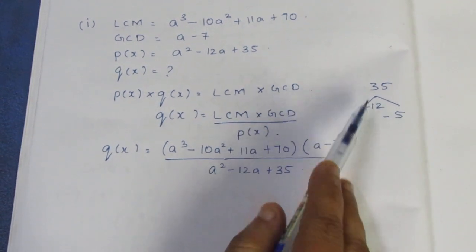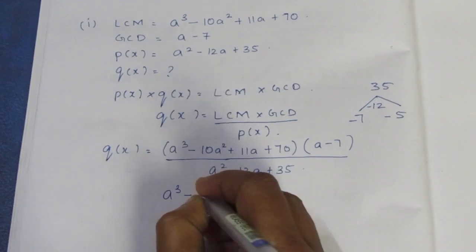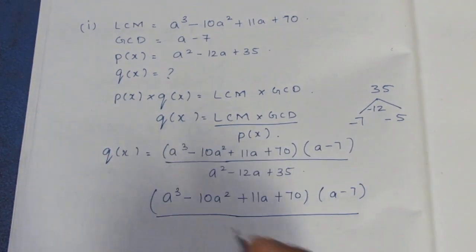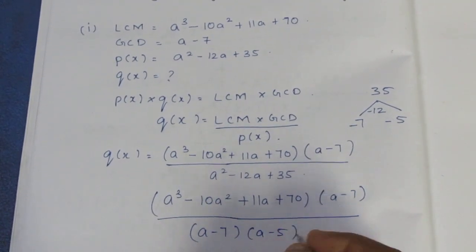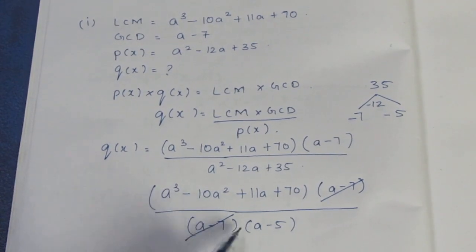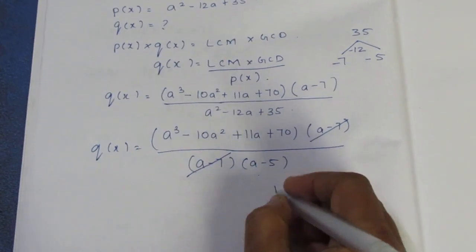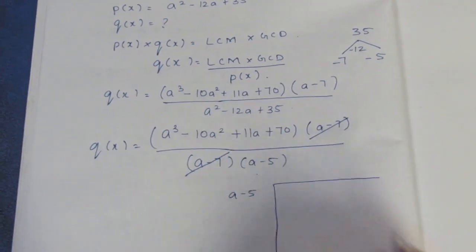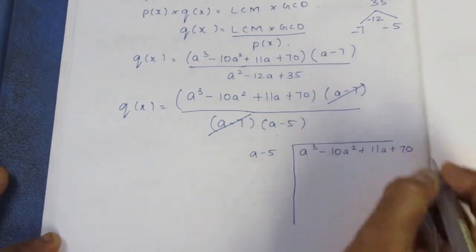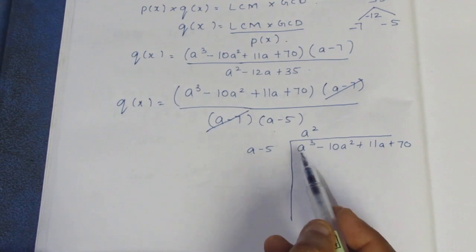If we add minus then we will take the greater number's sign. So we will divide a³ minus 10a² plus 11a plus 70 by P of X which factors as a minus 7 into a minus 5. We will cancel the division and divide by a minus 5.